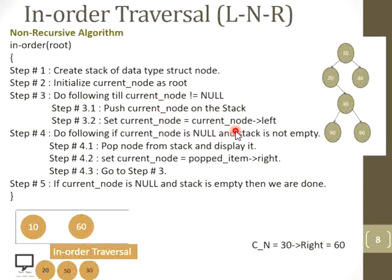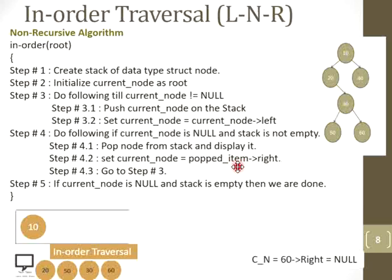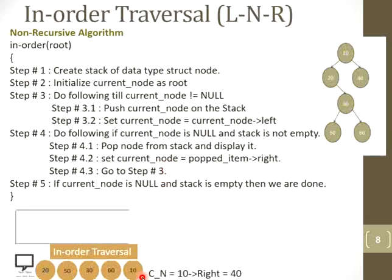Go to step number 4. Stack is not empty and current node is null — both conditions are true. Pop the top of the stack, which is 60, and display it. Now check the right child of the popped item 60 — it is also null. So the condition is true and we pop 10, which is the top of the stack, and display it.